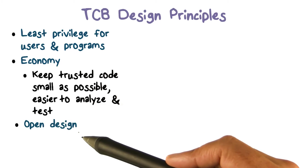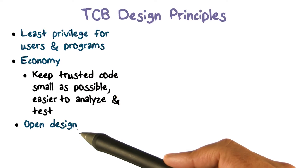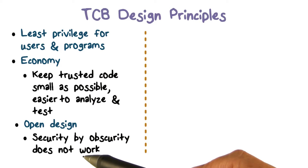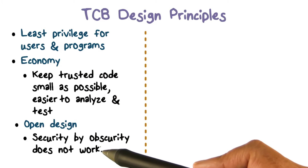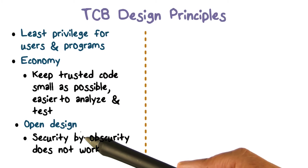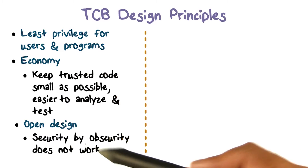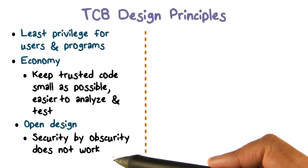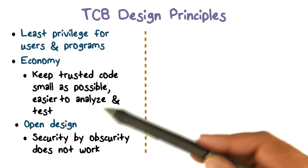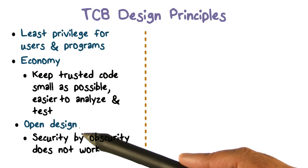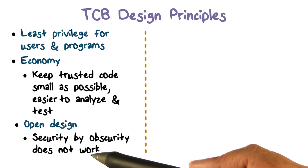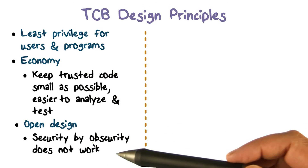Another design principle is open design. The idea is that trust is not going to come because somebody tells you to take their word for it. We're not going to have trust or confidence when security is by obscurity — when we don't know how something is done and basically have to take someone's word for it. That's not a good way to design a trusted computing system. You do want to have an open design, so security comes from understanding exactly how that level of security is being accomplished or achieved.